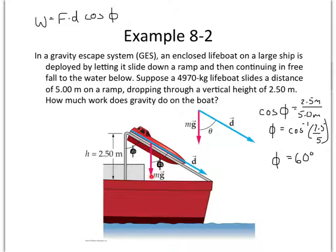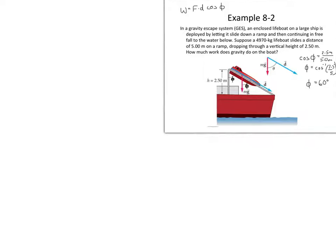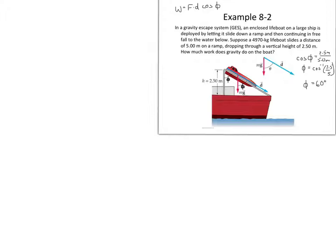So our angle phi between the direction of motion, down the face of the ramp, and the direction of the force, the weight force mg, is 60 degrees. So what I'm going to do is take everything we have right now, and I am going to shrink it down and give us a little bit more space to work. Let's look at our actual problem right here. First of all, we have this 4,970 kilogram lifeboat, so the mass of the system equals 4,970 kilograms. That's about 2.5 tons. And the displacement or the distance d equals 5.0 meters down the face of the ramp.